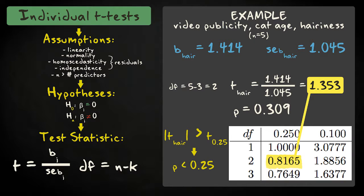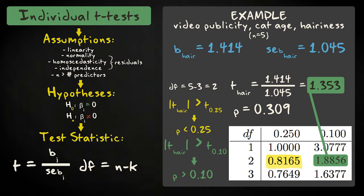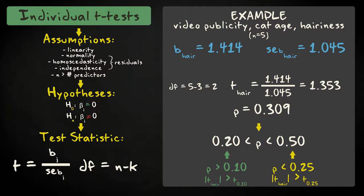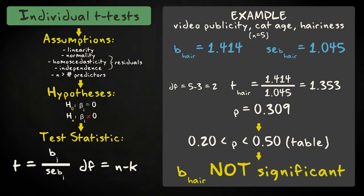The calculated two-sided p-value equals 0.309. If we use a table, we find that the right-sided p-value is at least smaller than 0.25 but again, larger than 0.10. So the two-sided p-value is again between 0.50 and 0.20. We can now conclude that hairiness is not related to video popularity while we control for age.